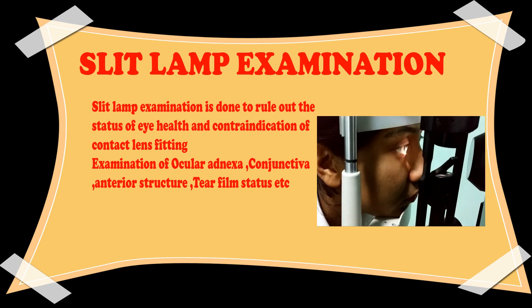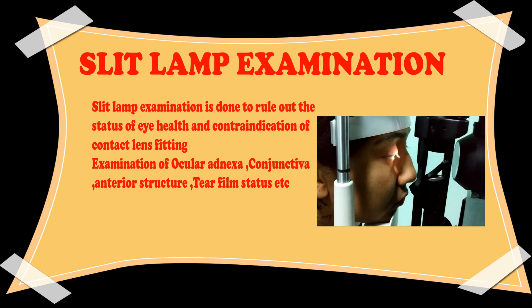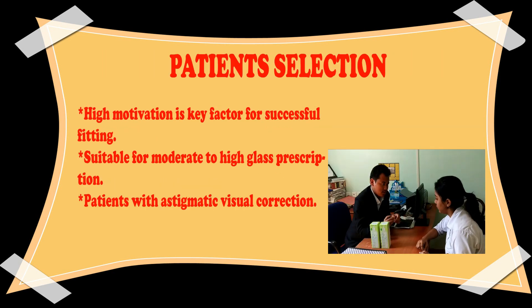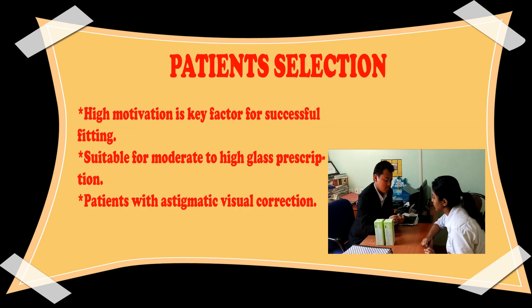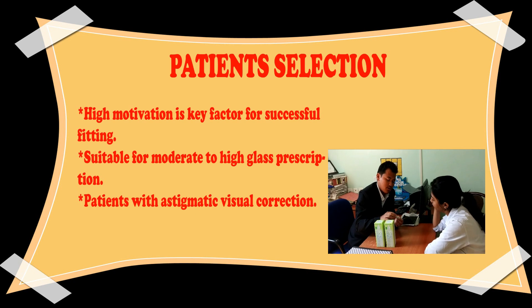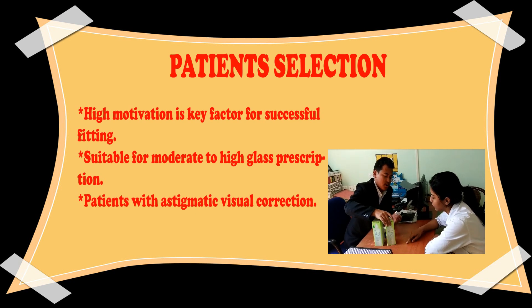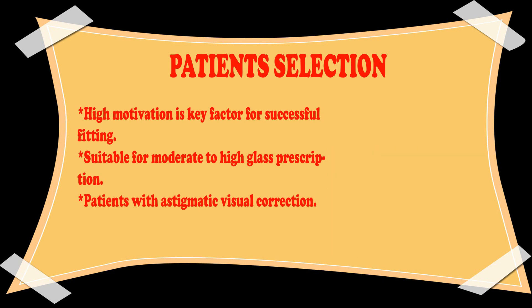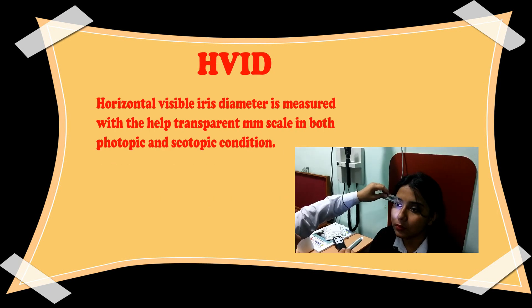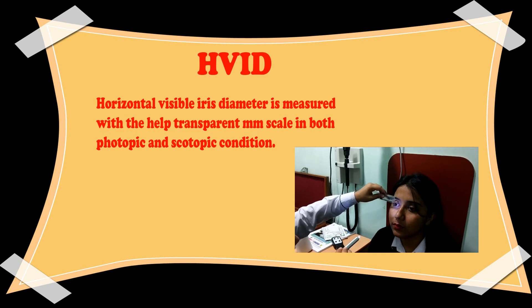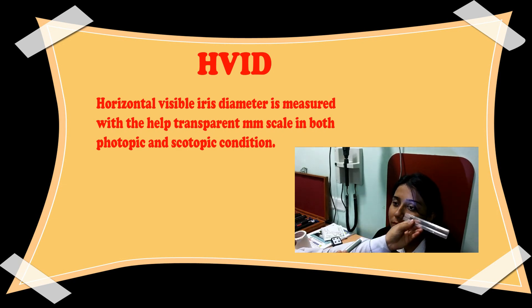Dry eye assessment under slit lamp is important for choosing a suitable contact lens for the patient. Before proceeding towards parameter selection and trialing of RGP contact lenses, patient counseling is very important. Patients who are highly motivated and have moderate to high prescription or astigmatism are generally selected.